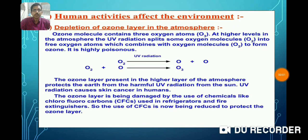Namaste dear students. This is my third video tutorial on the chapter Our Environment. In my previous video you have learnt about biological magnification, due to which harmful chemicals get accumulated in the food chain and their concentration increases with increase in the successive trophic levels. The maximum concentration of harmful chemicals can be detected in organisms which occupy the higher trophic level, leading to their death.